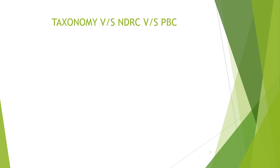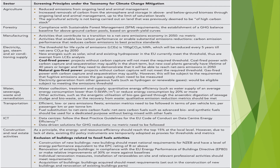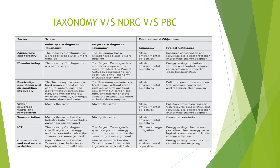Both taxonomies categorize activities into various sectors: agriculture, forestry, manufacturing, electricity, water, transportation, ICT, and construction. The scope of the industrial catalog, the project catalog, and the taxonomy all differ from one another.